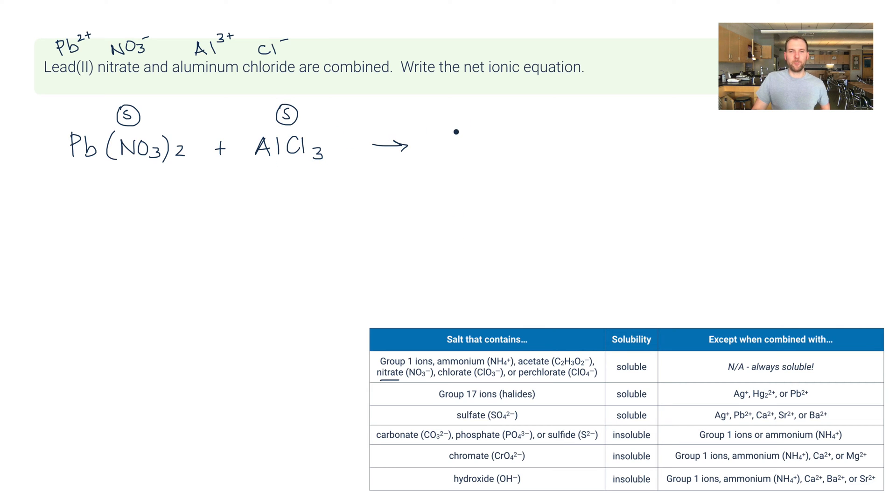So on the other side I want to flip the positives. So that means Al3 plus is going to get together with NO3 minus. So I will have Al(NO3)3. That's going to be soluble too because nitrates are always soluble. The other one is going to be Pb2 plus with Cl minus. So that's PbCl2. PbCl2 is insoluble. Halides are soluble unless it's with Pb. So this is my precipitate.